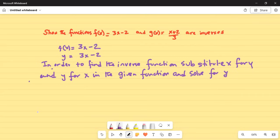So what they're saying is basically in the original function where x appears make it y and where y appears make it x, then we'll solve for y.